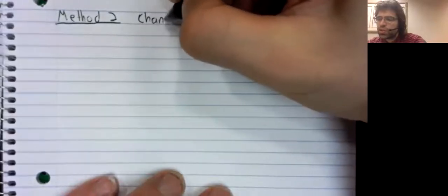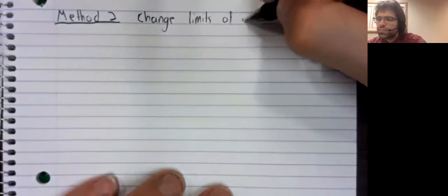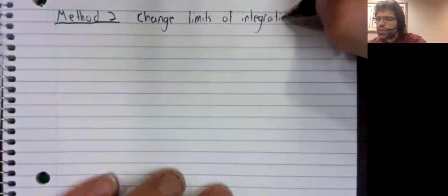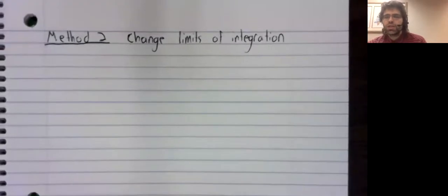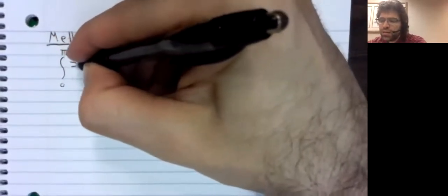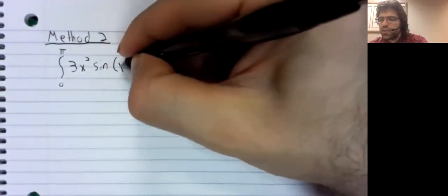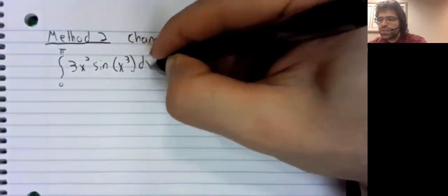The way most textbooks present it, what I'll call Method 2, is to change the limits of integration. And what could I mean by that? We'll find out shortly. Let's attack this same problem a second time: the integral from zero to pi of 3x squared times the sine of x cubed dx.